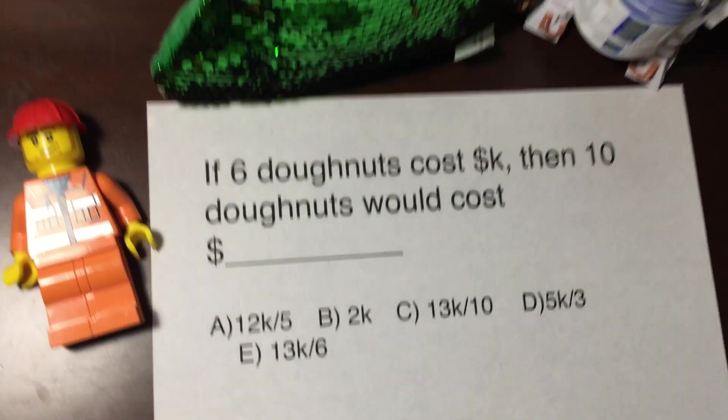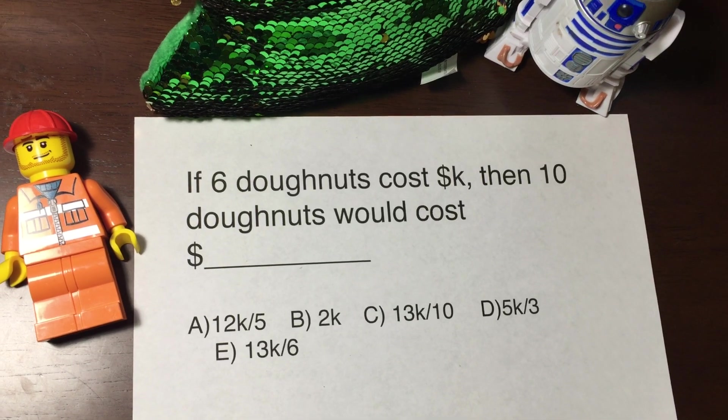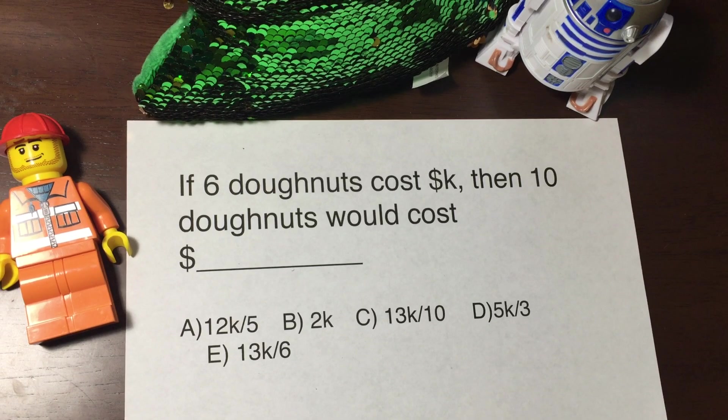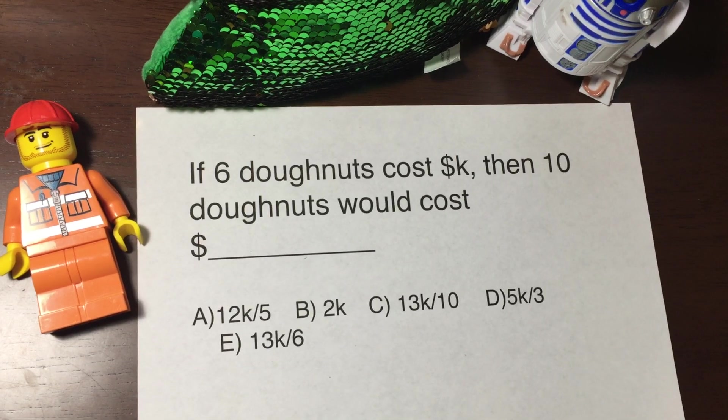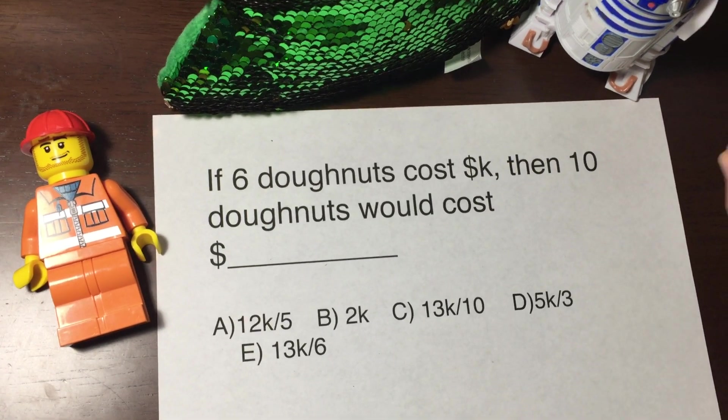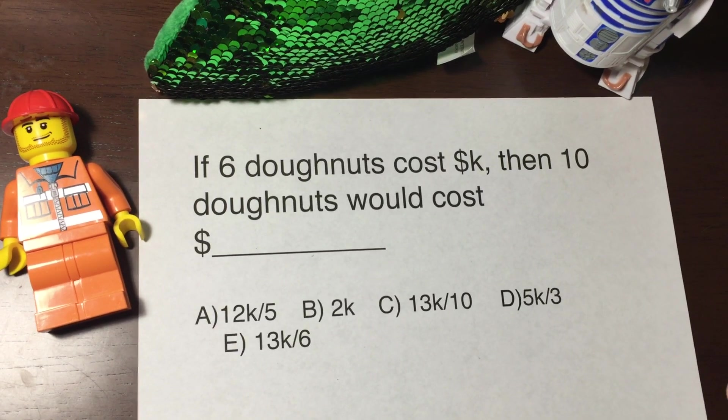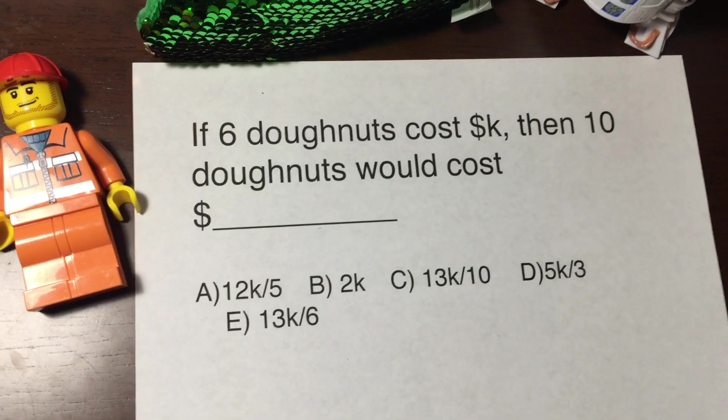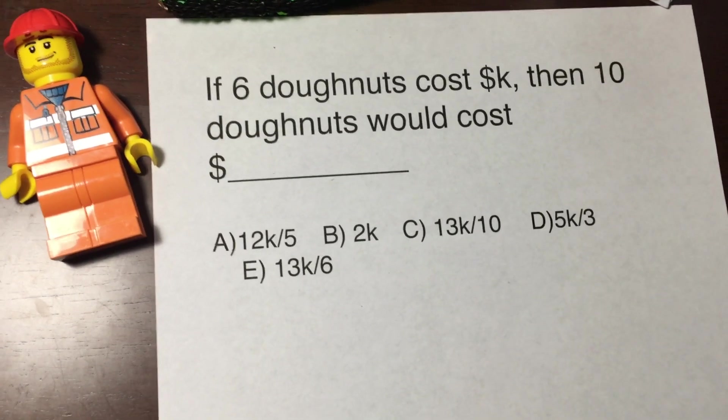If six donuts cost k dollars, then ten donuts will cost blank dollars. So I used k as blank because if you haven't learned algebra it's okay, but in algebra a letter is just a meaning of blank, so I just use k for this video.